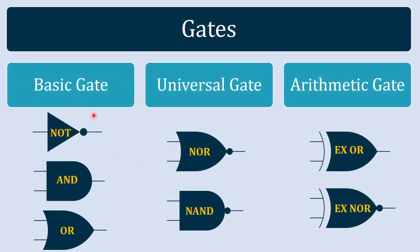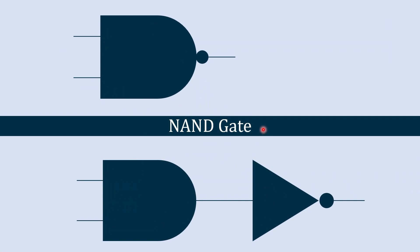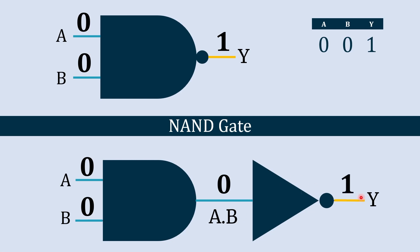Now we are approaching the universal gates, starting with the NAND gate. The NAND gate is the combination of two basic gates: AND gate and NOT gate. When both inputs A and B are 0, the AND gate output is 0, and the NOT gate inverts it to give 1 in output. When A is 1 and B is 0, the AND gate output is 0, and the NOT gate again inverts it to give 1 in output.